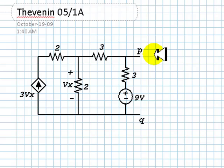In this circuit, we need to find the Thévenin equivalent at port PQ. We utilize the 1-Amp 2-Amp method.